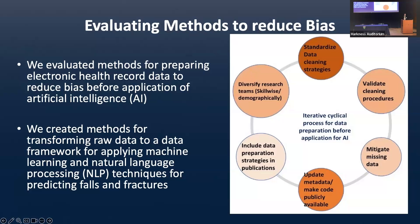We evaluated methods for preparing electronic health record data to reduce bias before application of AI. We created methods for transforming raw data to a data framework for applying machine learning and natural language processing techniques for predicting falls and fractures. As you see on the figure, this is a cyclic process. The major broad key points included here are standardizing data cleaning strategies, validating the cleaning procedures, mitigating missing data, maintaining and updating metadata, making the code publicly available, and including all these strategies in public-facing publications.